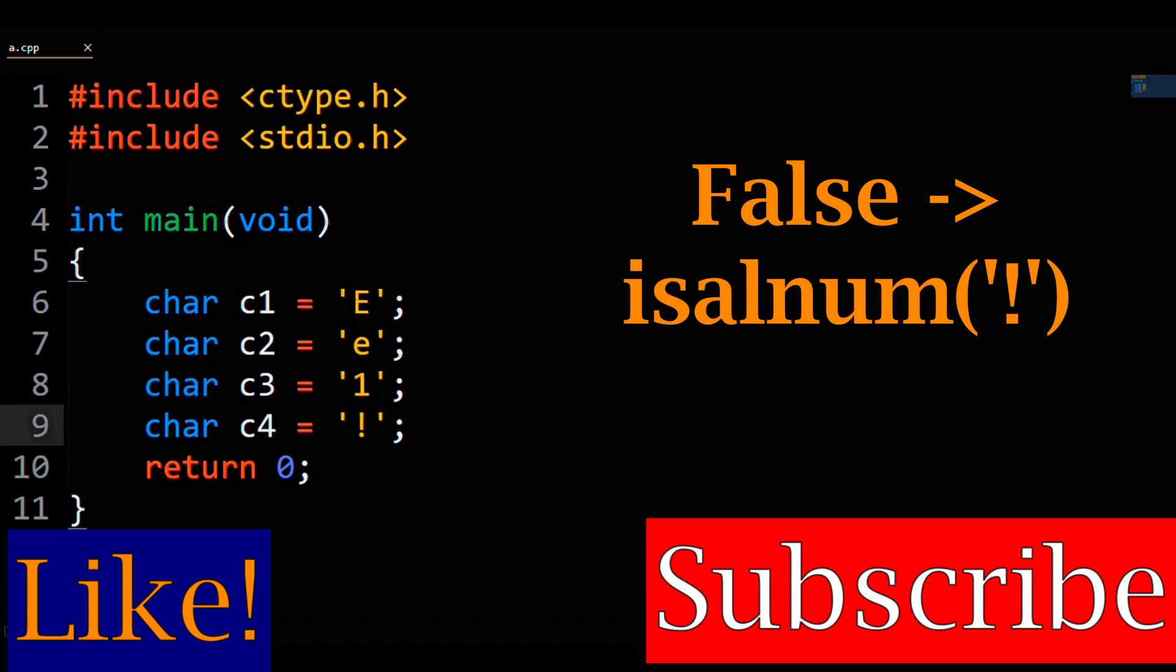That leaves the question of what happens with the exclamation point. Since the exclamation point is not alphanumeric, IsAlNum in C++ will return zero. Like the other cases, zero represents false because that's how the function was made.